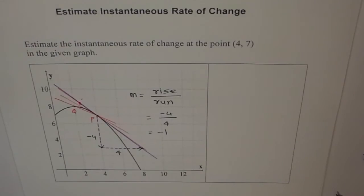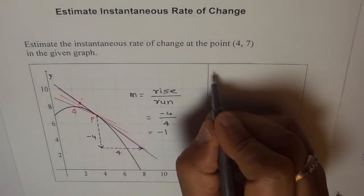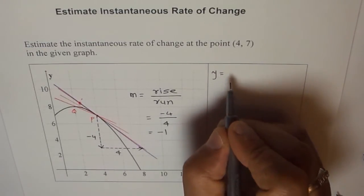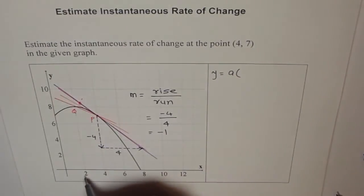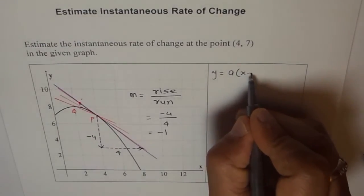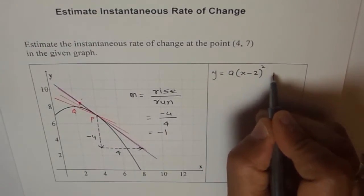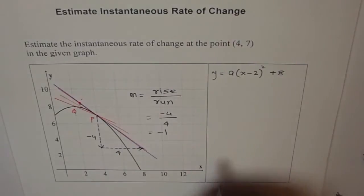And once we find the equation of the curve, then we can find instantaneous rate of change at (4,7), or for that matter, any point. So let's try to make an attempt. And you also try to find the equation of this parabola. It shouldn't be difficult for you at this stage. Now, so we have a vertex at 2. So we can write y here for the time being, equals to a. We don't know what a is. But we definitely know what the vertex is. Vertex is at 2 and 8. So we can write this as a(x minus 2) squared plus 8.